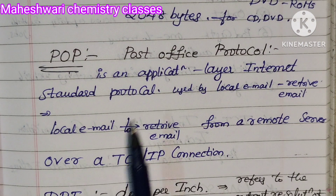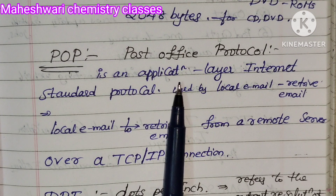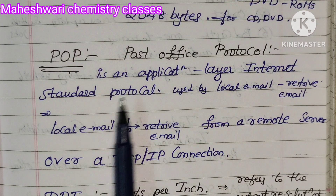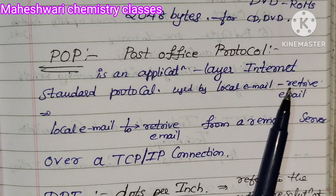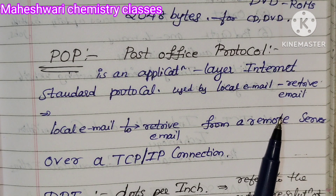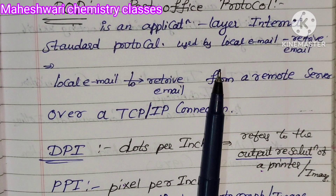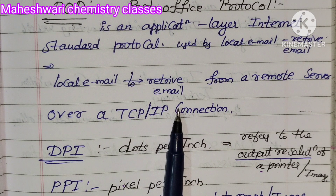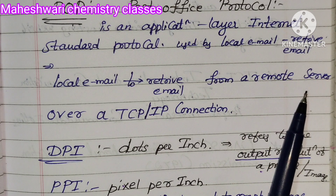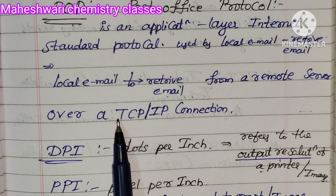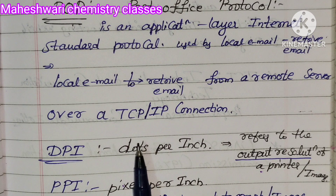POP — Post Office Protocol — is an application-layer internet standard protocol used to retrieve email. The purpose of POP is to retrieve local email from a remote server over a TCP/IP connection.